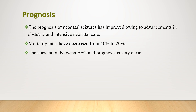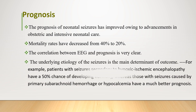Regarding prognosis, the prognosis of neonatal seizure has improved owing to advancements in obstetric and neonatal intensive care, and mortality rates have decreased from 40% to 20%. The underlying etiology of the seizure is the main determinant of outcome, and the correlation between EEG and prognosis is very clear. For example, patients with seizures secondary to hypoxic-ischemic encephalopathy have a 50% chance of developing normally, whereas those with seizures caused by primary subarachnoid hemorrhage or hypocalcemia have a much better prognosis.